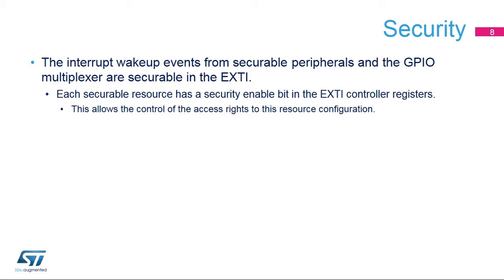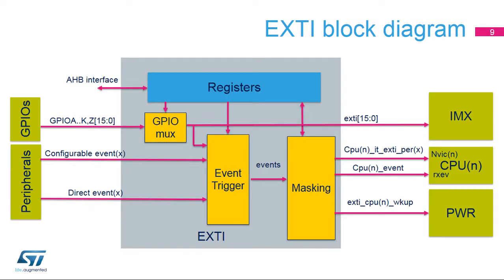Also, the interrupt wake-up event from securable peripherals can be secured thanks to enable bits in the eXTI controller registers. The GPIO multiplexer provides individual security enable bits for the 16 peripheral interconnect external event lines. As shown in this figure, the eXTI consists of a register block accessed via an AHB interface, an event input trigger block, a masking block, and the GPIO multiplexing.